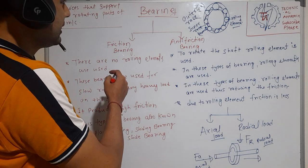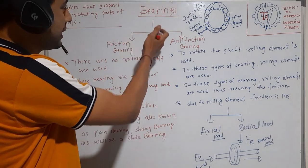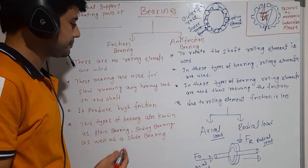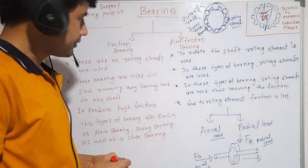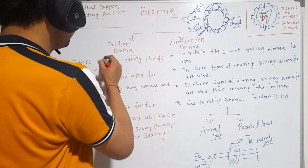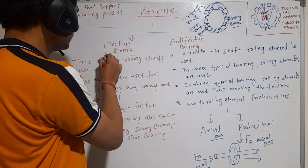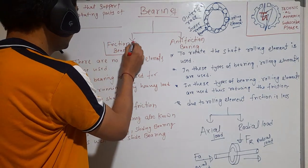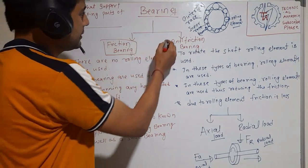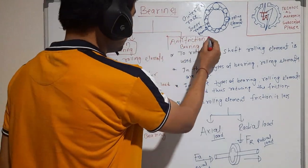There are two types of bearing. The first is friction bearing, and the other is anti-friction bearing.